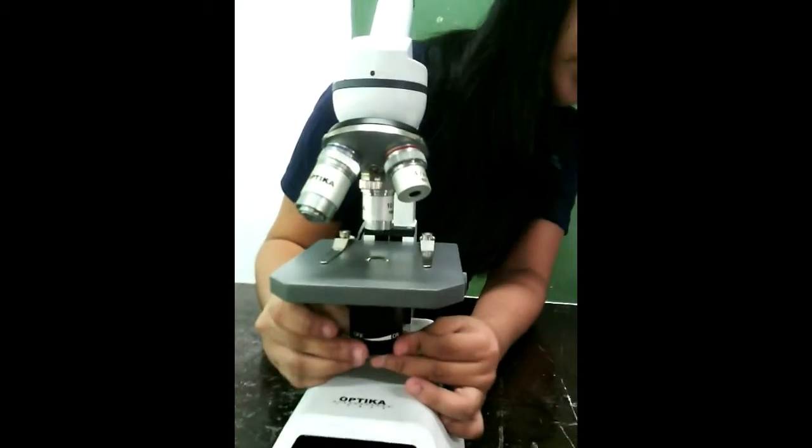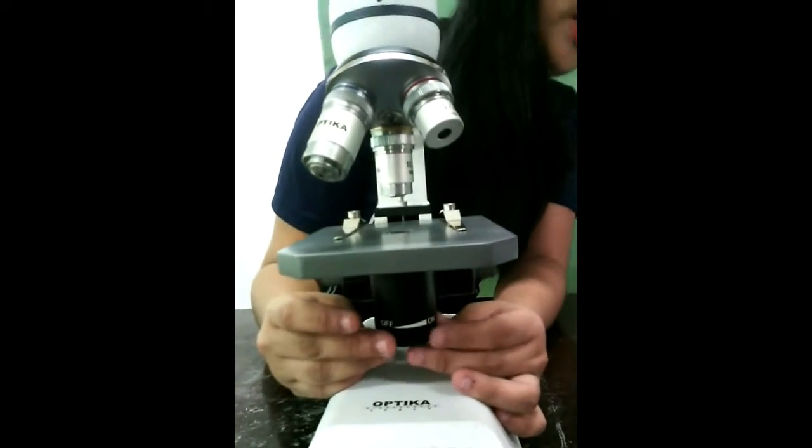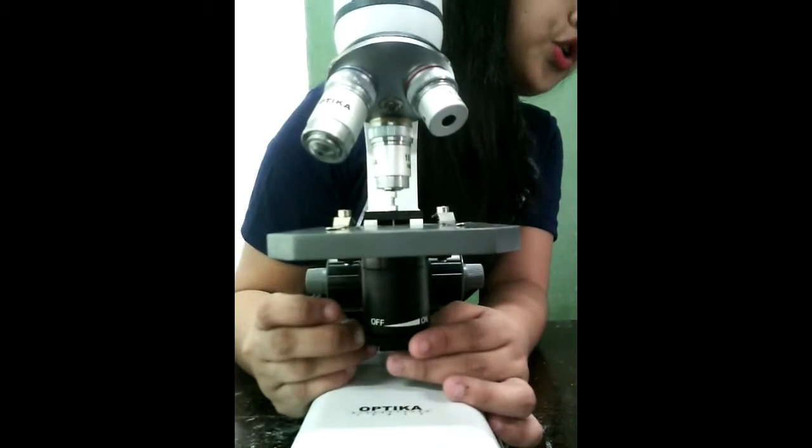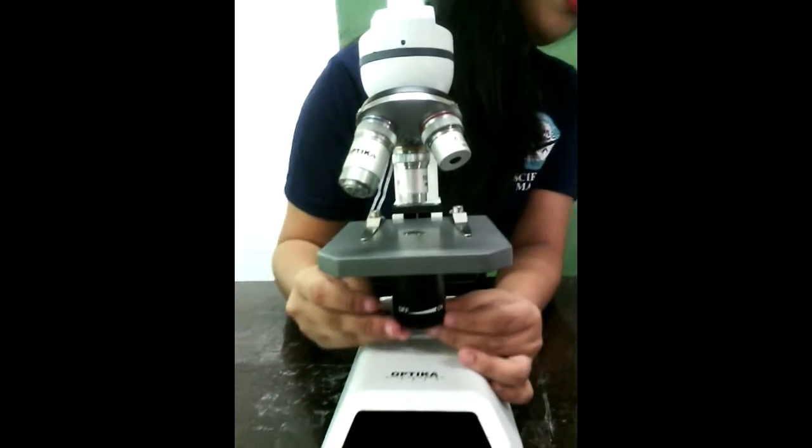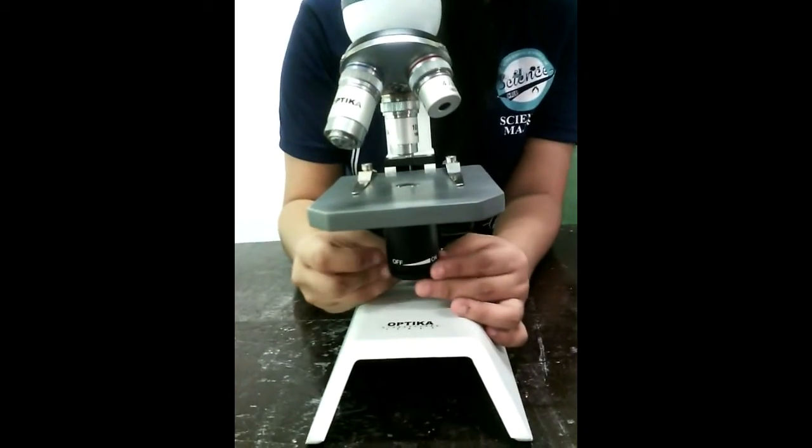The condenser, located on a substage held in place by a rack, is used to condense or concentrate the light reflected from the mirror to the object or specimen being examined.